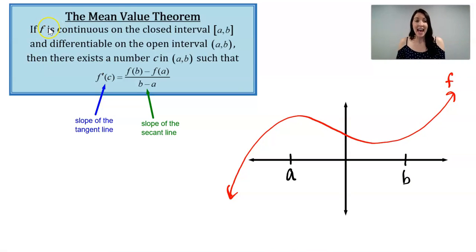As you can see, the f that I've drawn is continuous on the closed interval from a to b. There's no holes, jumps, or vertical asymptotes, and it's also differentiable. It's nice and smooth. There's no sharp turns.